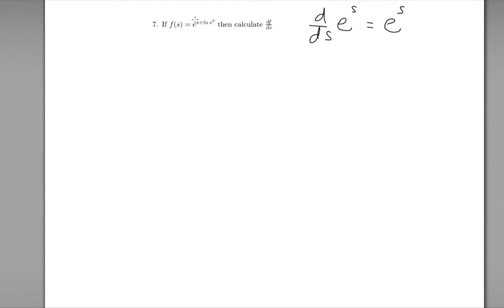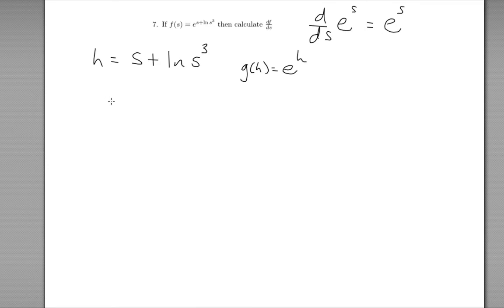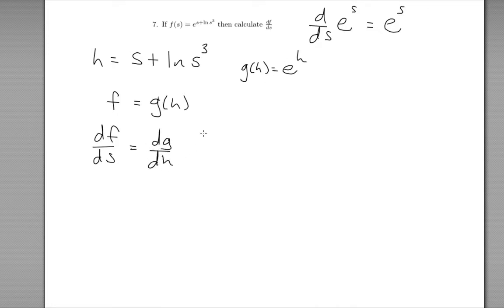What I'm going to do is take the complicated bit — the exponent — and rename it. I'm going to call it h. So h is s plus ln of s cubed. This means the thing we're actually trying to take the derivative of looks like e to the power of h. I'm going to call that a function g of h, so e to the power of h is just some function g. So f is equal to g of h, where we replace h with what h actually is: s plus ln of s cubed.